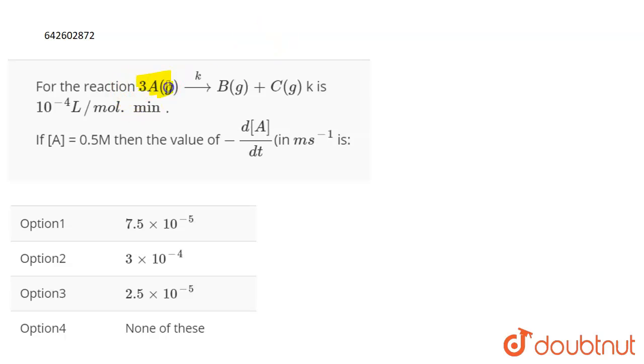The question is: for the reaction 3A gas at rate constant K gives B gas plus C gas, K is the rate constant which is 10 to the power minus 4. The rate constant is given to you as 10 to the power minus 4 liter per mole per minute, means mole inverse minute inverse.